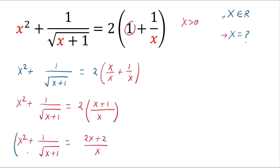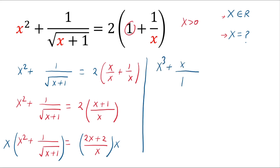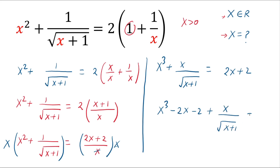Now if we multiply both sides by x — since we know x is not equal to 0 — then in the left hand side we get x cubed plus x over square root of x plus 1. After rearranging everything, this equals 0.